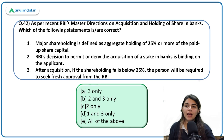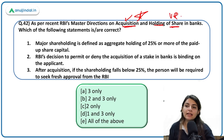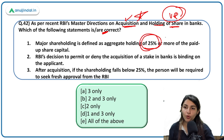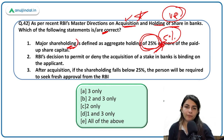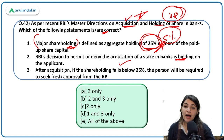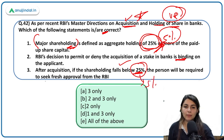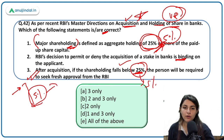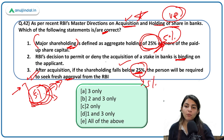As per RBI's master direction on acquisition and holding of shares in banks: major shareholding is defined as aggregate holding of 25% — incorrect; it is actually 5%. Anyone holding more than 5% is said to hold a major shareholding. RBI's decision to permit or deny acquisition of stake in banks is binding on the applicant — correct. After acquisition, if shareholding falls below 5%, the person will be required to seek fresh approval from RBI — correct.